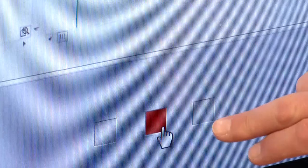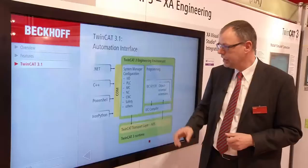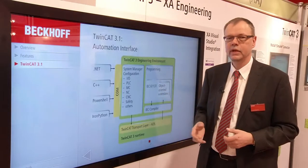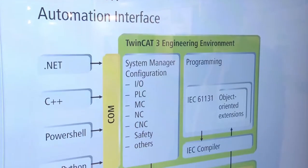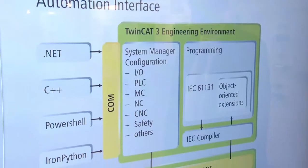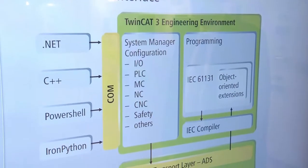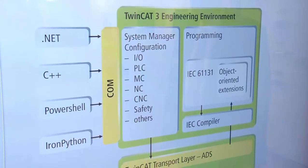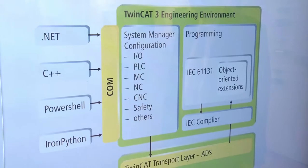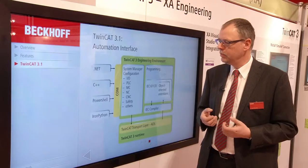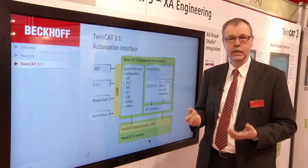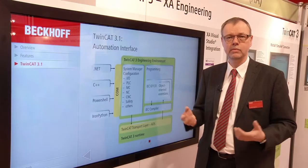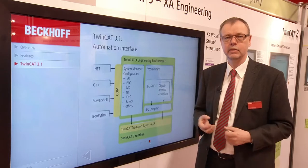Another major addition is the automation interface. TwinCAT had an automation interface in version 2, but now it has been extended so that PLC code, C++ code, and MATLAB Simulink code can all be automatically generated.